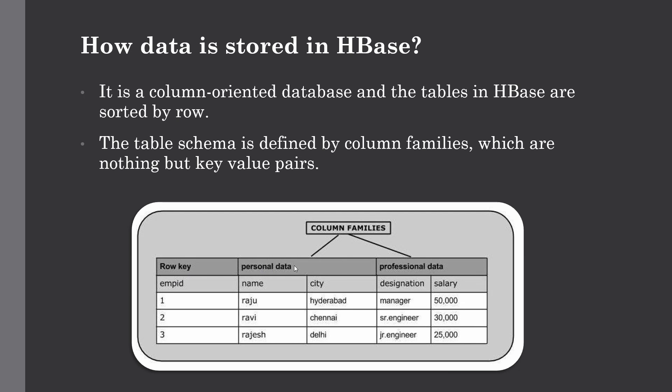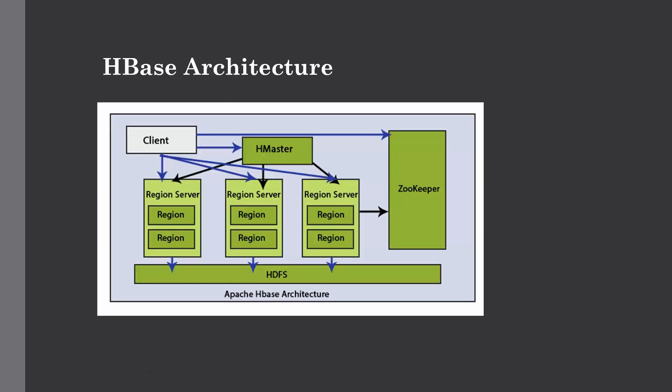Taking an example, we have two column families: 'personal data' and 'professional data'. These column families further have a number of columns — in personal data we have name and city, whereas in professional data we have designation and salary. It can have a flexible schema, so it is not mandatory that a column can only store a certain data type, which is why it is suitable for sparse data.